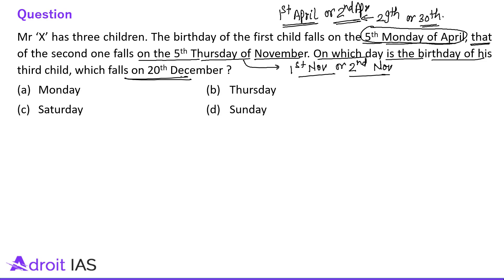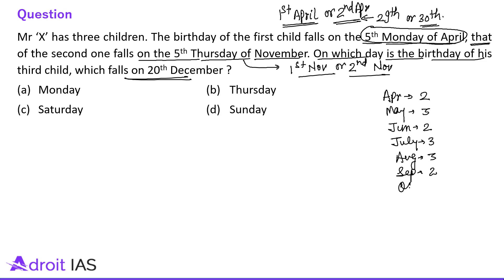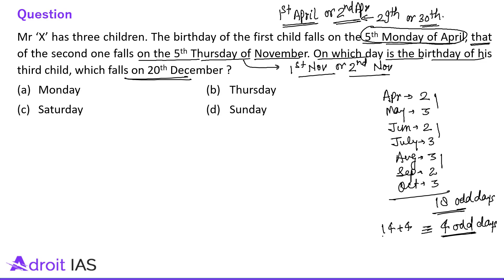Let's talk about the odd days between April and November. April has 2 odd days (30 days = 28 complete weeks + 2 odd days). May has 3 odd days, June 2, July 3, August 3, September 2, October 3. Adding them: 2+3+2+3+3+2+3 = 18 odd days. Dividing 18 by 7 gives 14 + 4, so 18 odd days is equivalent to 4 odd days.